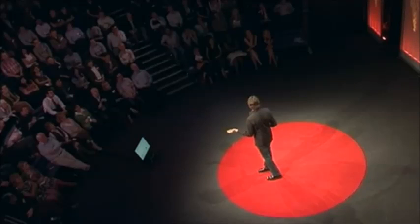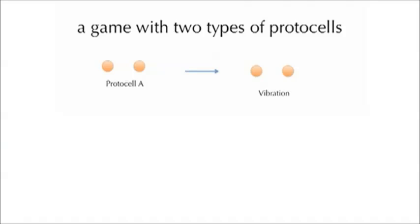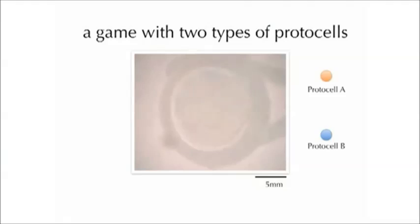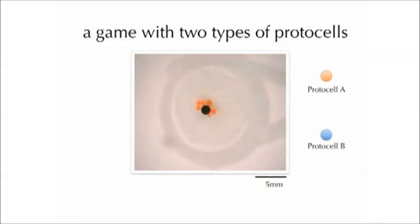Now that you're all experts on protocells, we're going to play a game. We make two different kinds: Protocell A has a certain chemistry inside that when activated, the protocell starts to vibrate and dance around. Protocell B has a different chemistry, and when activated, the protocells all come together and fuse into one big one. We put these two populations together in the same system and activate it. The blue protocell Bs all come together, fuse, and form one big blob, while the other protocell just dances around, until all the energy in the system is used up — then game over.